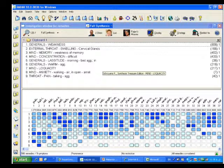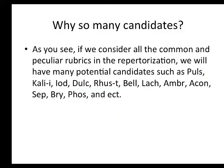This is what you call a rectangular repertorization — not too informative. If we consider all the common and peculiar rubrics in the repertorization, we will have many potential candidates such as Pulsatilla, Kali-iodine and Iodine, Dulcamara, Rhus tox, Belladonna, Lachesis, Ambra, Aconite, Sepia, Bryonia, Phosphorus, etc.